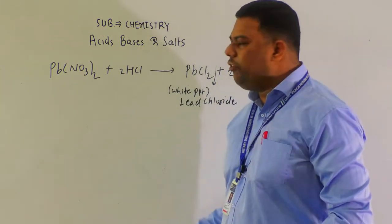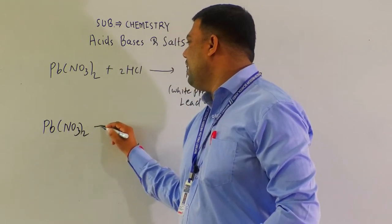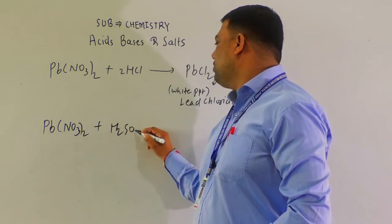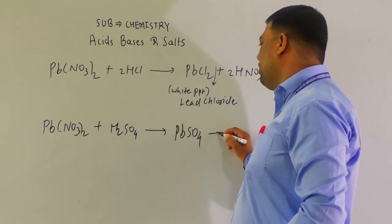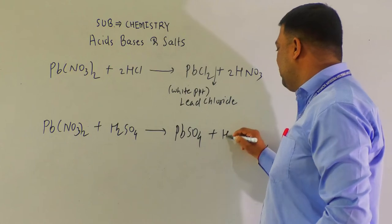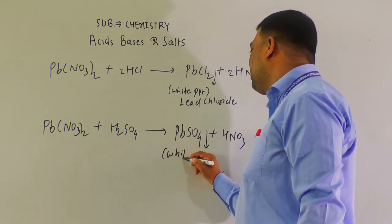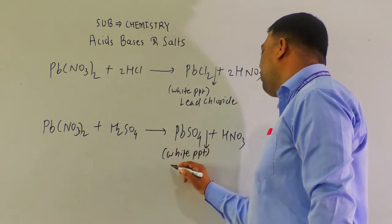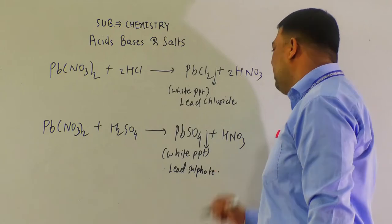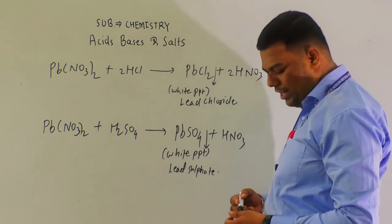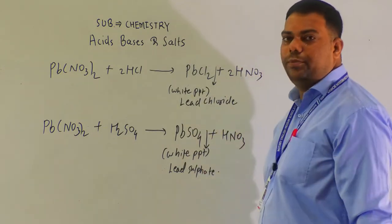Similarly, Pb(NO₃)₂ reacts with H₂SO₄: by double displacement we get PbSO₄ + HNO₃. Here again a white precipitate is formed — lead sulfate. These are reactions we can perform in the chemistry lab.